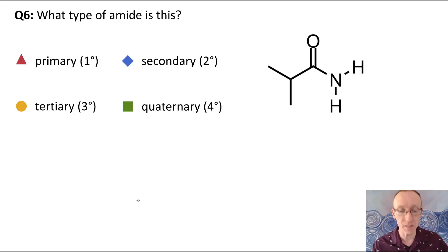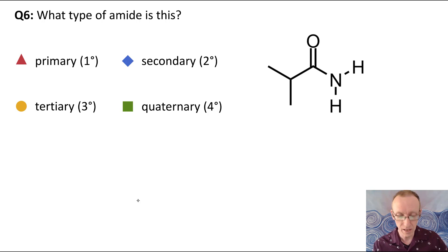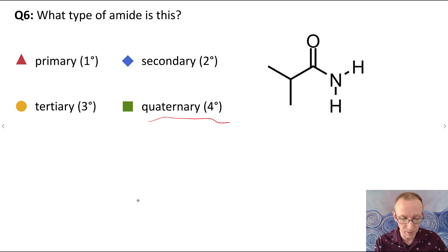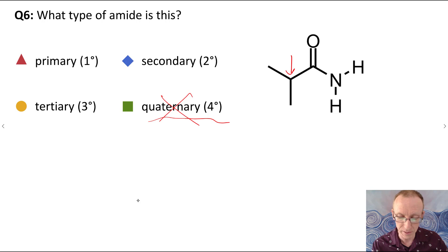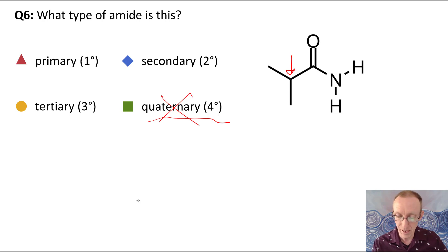Related to that, question six is asking about this particular molecule: is it a primary, secondary, or tertiary amide? Quaternary doesn't make sense because there's no such thing as quaternary amides, so we can immediately scratch that out. One point of confusion here might be if you get distracted by the R group attached to the amide. When classifying amides as primary, secondary, or tertiary, we're only interested in how many hydrogens versus carbon-based groups are attached to the nitrogen.